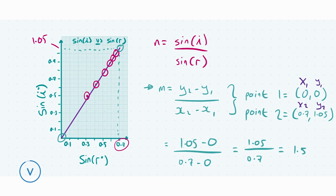This question was worth a total of seven marks. You got three marks for correctly writing down the formula for the slope of the line, two marks for correctly substituting the points from the graph into the formula, and a final two marks for correctly getting an answer in and around 1.5. This gives a total of seven marks for this part.